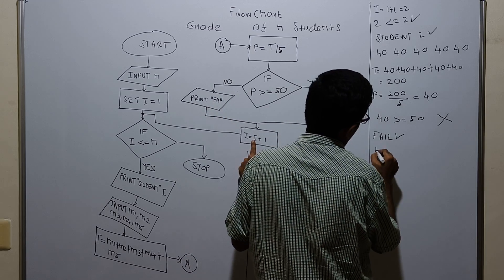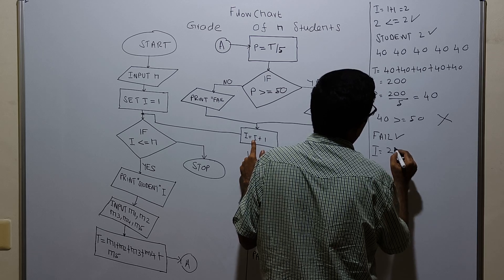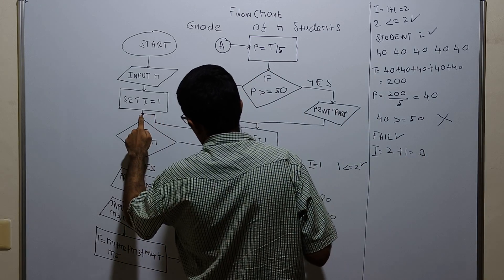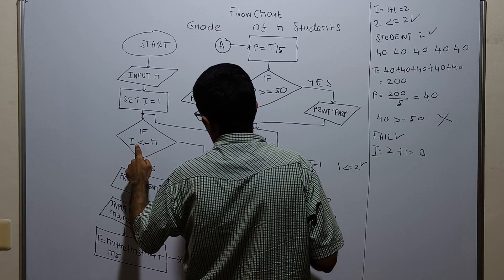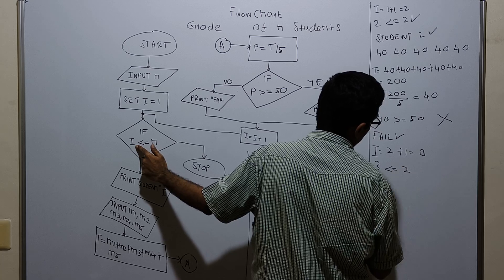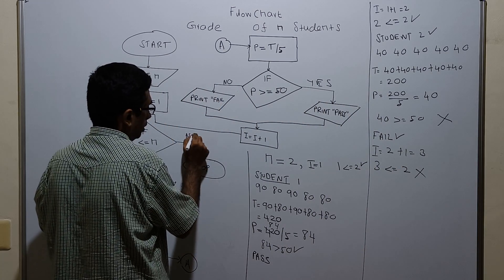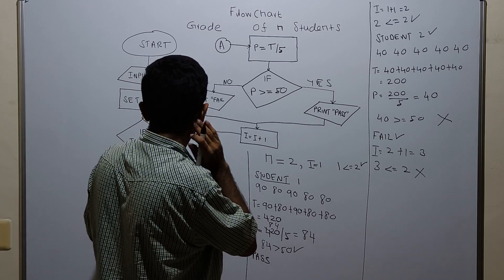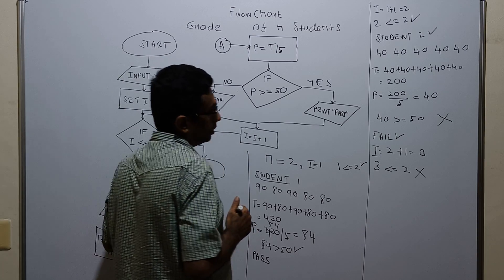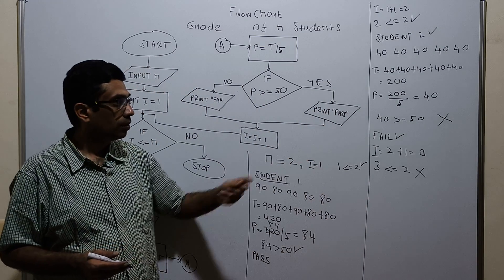Now I am incrementing i by 1: i equals 2 plus 1 equals 3. Going back to the decision statement, checking i less than or equal to n: 3 less than or equal to 2 is false. If the condition is false, it will reach the logical end. So the flowchart is working perfectly.